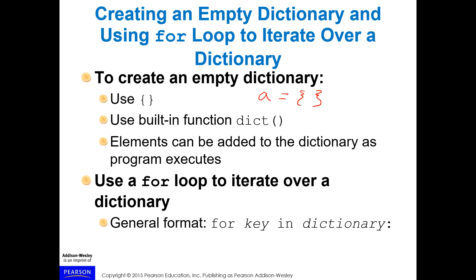You can use loops with dictionaries. Using a for loop to iterate over a dictionary: you can create an empty dictionary and add elements as the program executes. You can also use the built-in dict() function. To iterate, use 'for item in dictionary' — this allows you to iterate through objects in the dictionary.